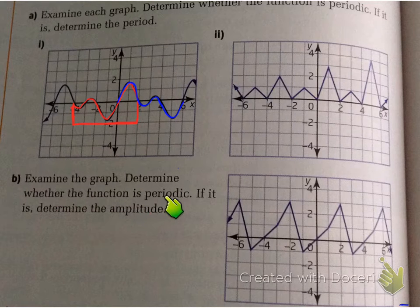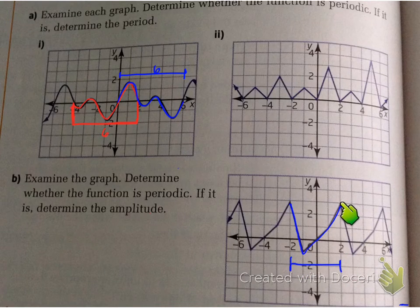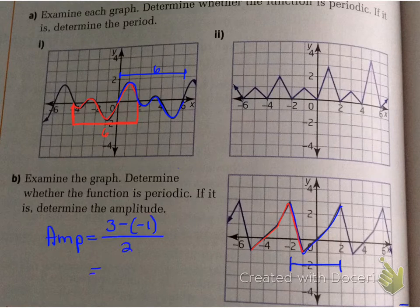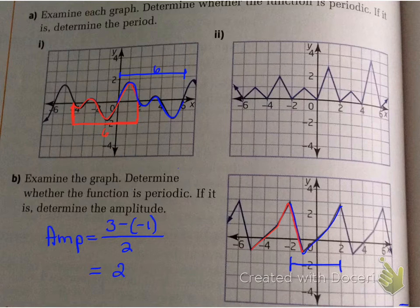Examine the next graph. Determine whether the function is periodic, and if it is, determine the amplitude. Trace one cycle — there's a length of 6. The amplitude is the highest minus the lowest divided by 2. Highest is 3, lowest is negative 1, divided by 2 gives you 2. Whether you trace the red cycle or the blue one, tracing one cycle allows you to determine the period, the amplitude, and all other parts of the periodic function.